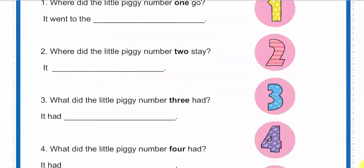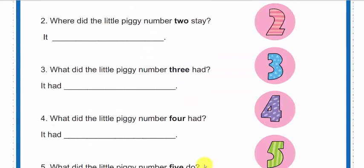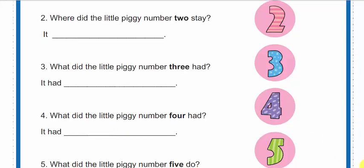So the answer for number four is: It had none. The number five and last one.